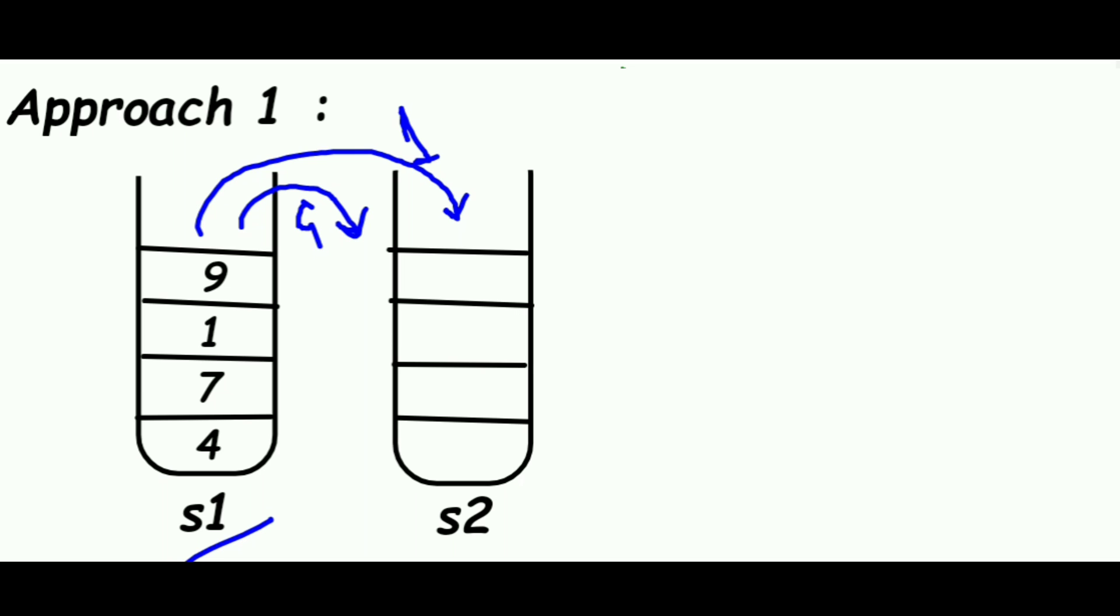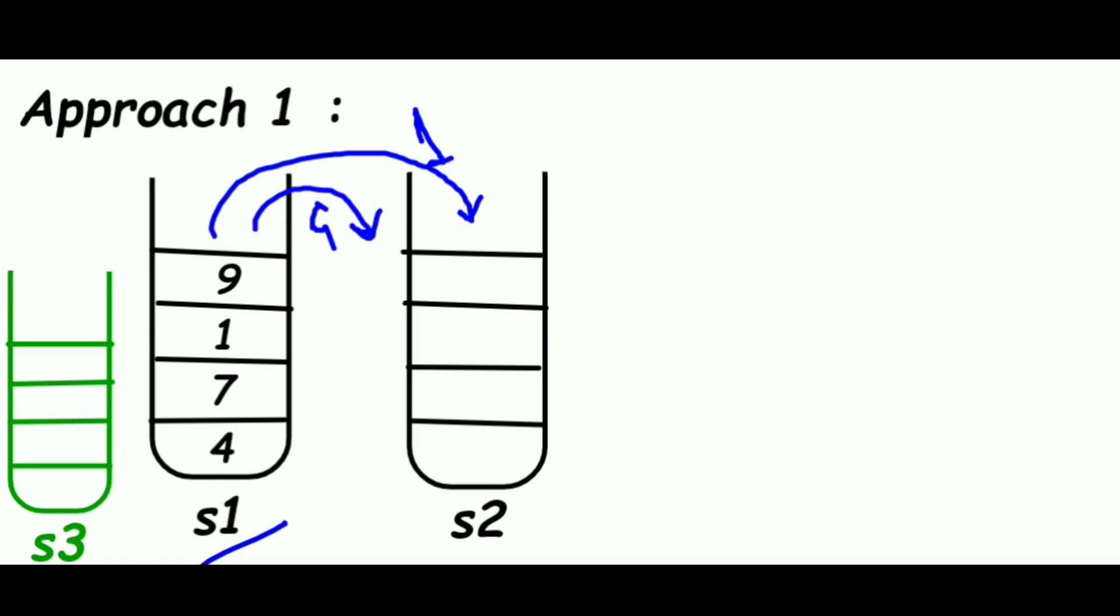This approach will actually require 3 stacks. The first one is the original stack S1. The second one will be the final stack which is the sorted stack, that will be S2. And the third stack will be stack S3 which will act as a buffer during our searching of the minimum element from stack S1. To search for the minimum element from stack S1, we need to pop elements from S1 and push it onto stack S3.